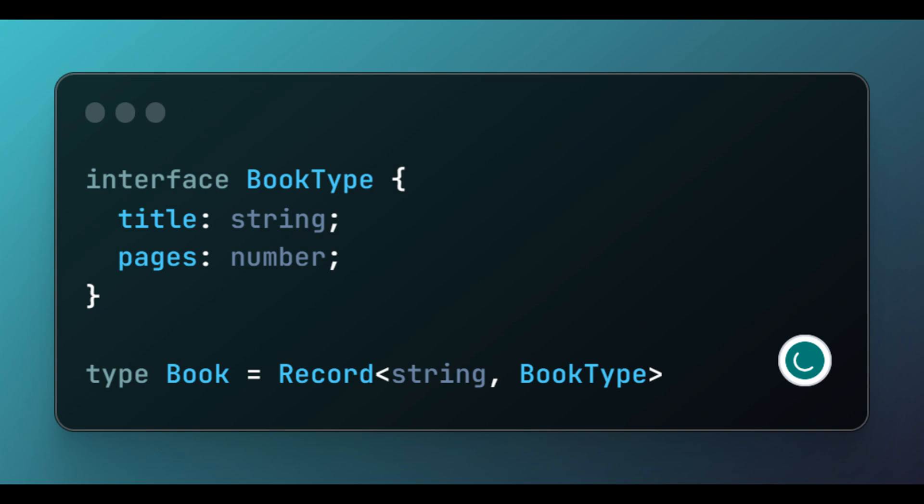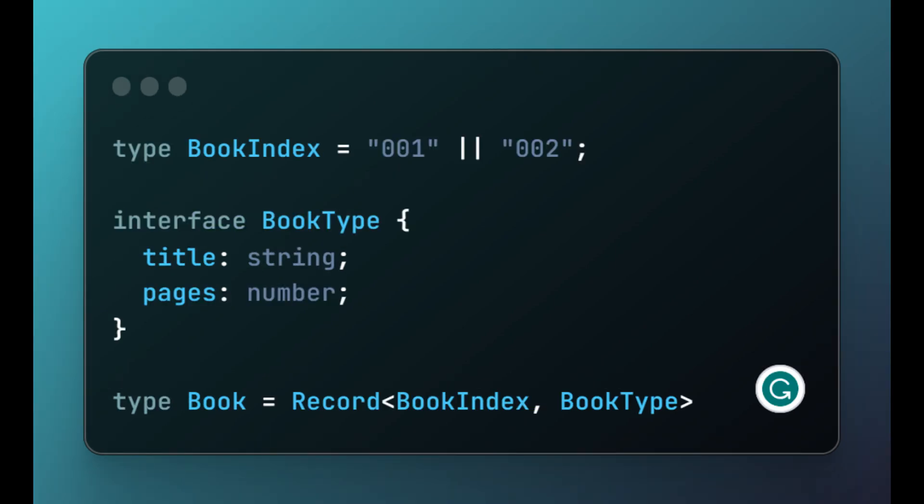To constrain the keys that should be on the book dictionary, we can pass in a literal union type as shown next.